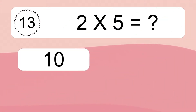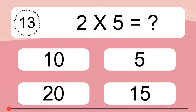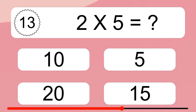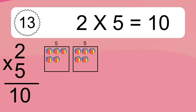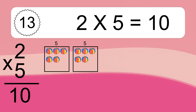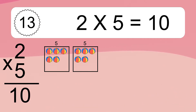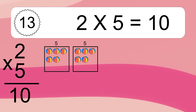2 times 5 equals what? 2 times 5 equals 10. We have 2 boxes, and each box has 5 colorful balls inside. If you count all the balls in all the boxes together, you will have 2 times 5 balls. This equals 10 balls.